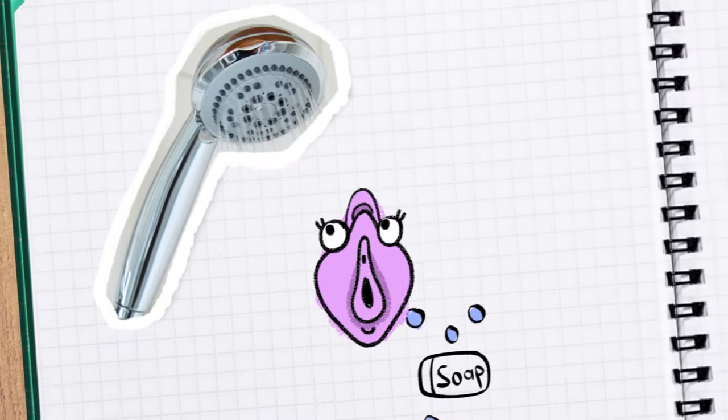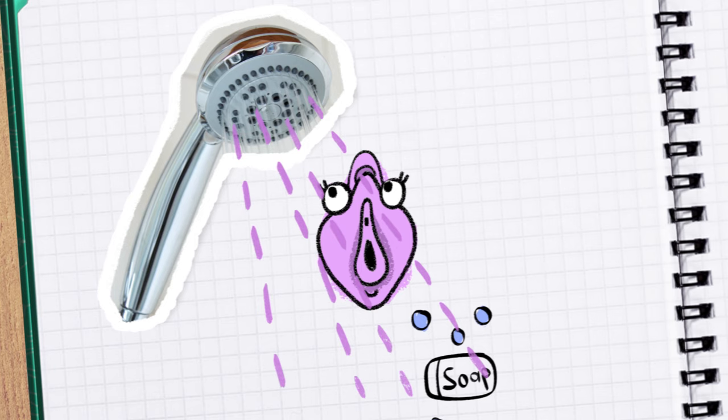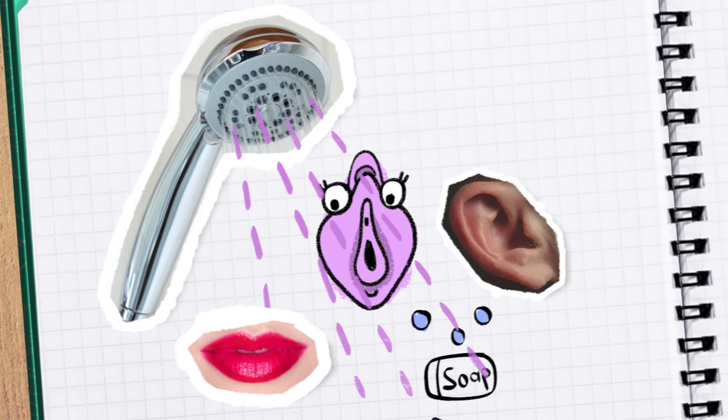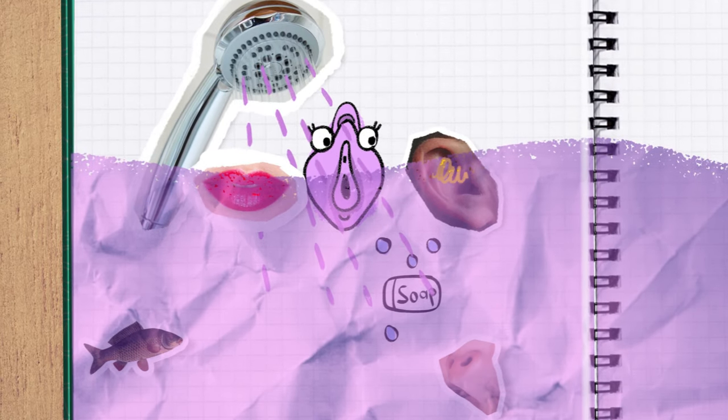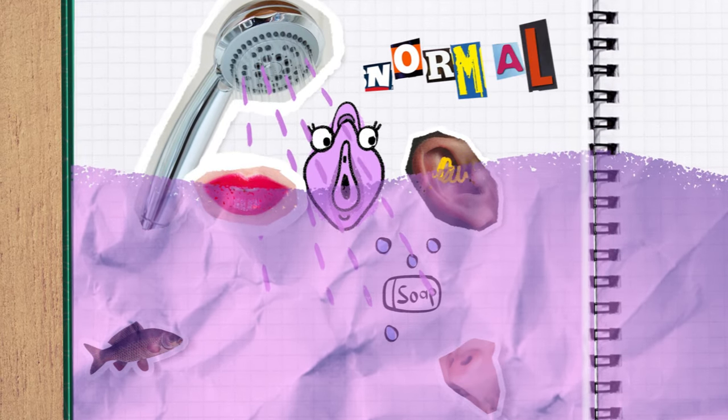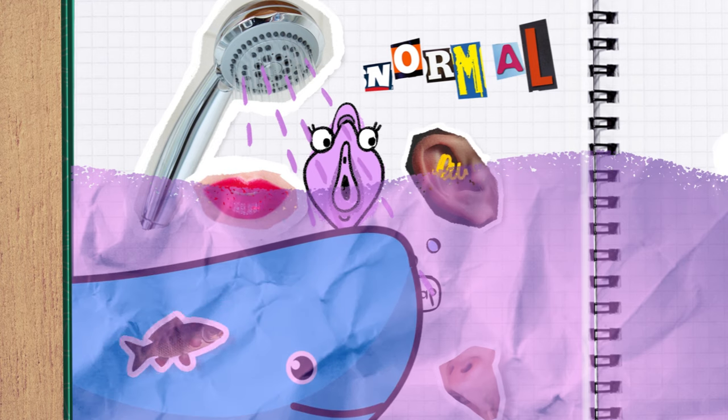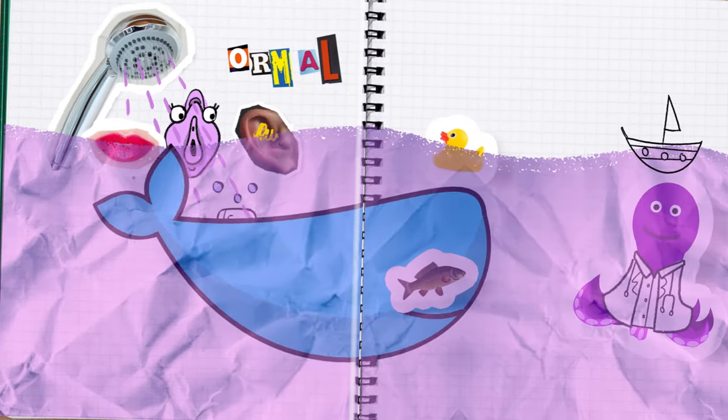It's actually the vagina's way of keeping itself clean, just like saliva in the mouth or earwax in the ears. If the amount of fluid, the color, or the odor of the discharge changes from what's normal for your body, then it's time to talk with a trusted adult and maybe visit a health care provider.